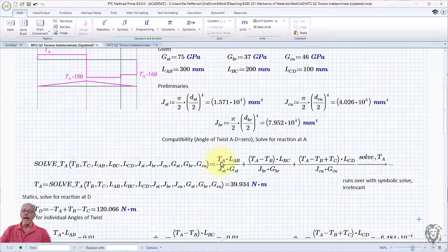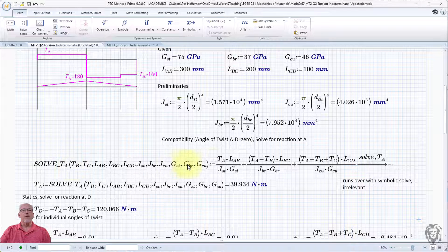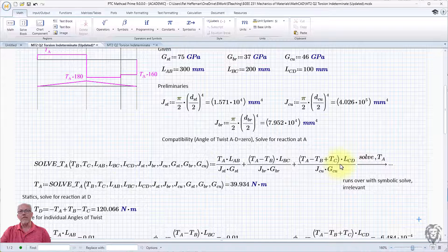except for TA, which is the only unknown. So not really intuitive, at least I didn't think it was that intuitive to do. And use the symbolic solver.